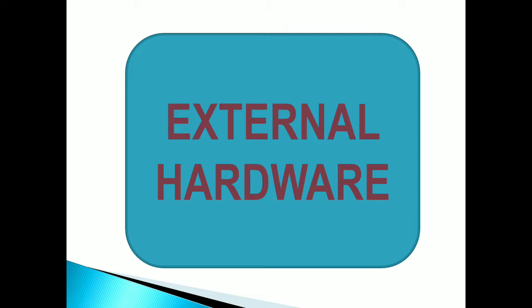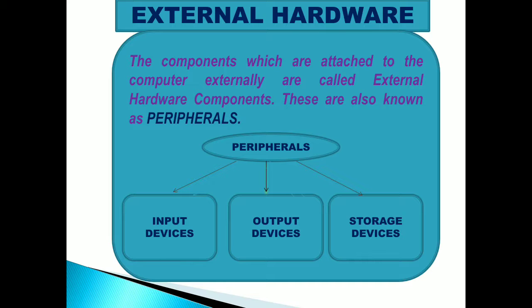Now we will see the External Hardware. The components which are attached to the computer externally are called external hardware components, also known as peripherals. Peripherals can be of three types: Input devices, Output devices and Storage devices.